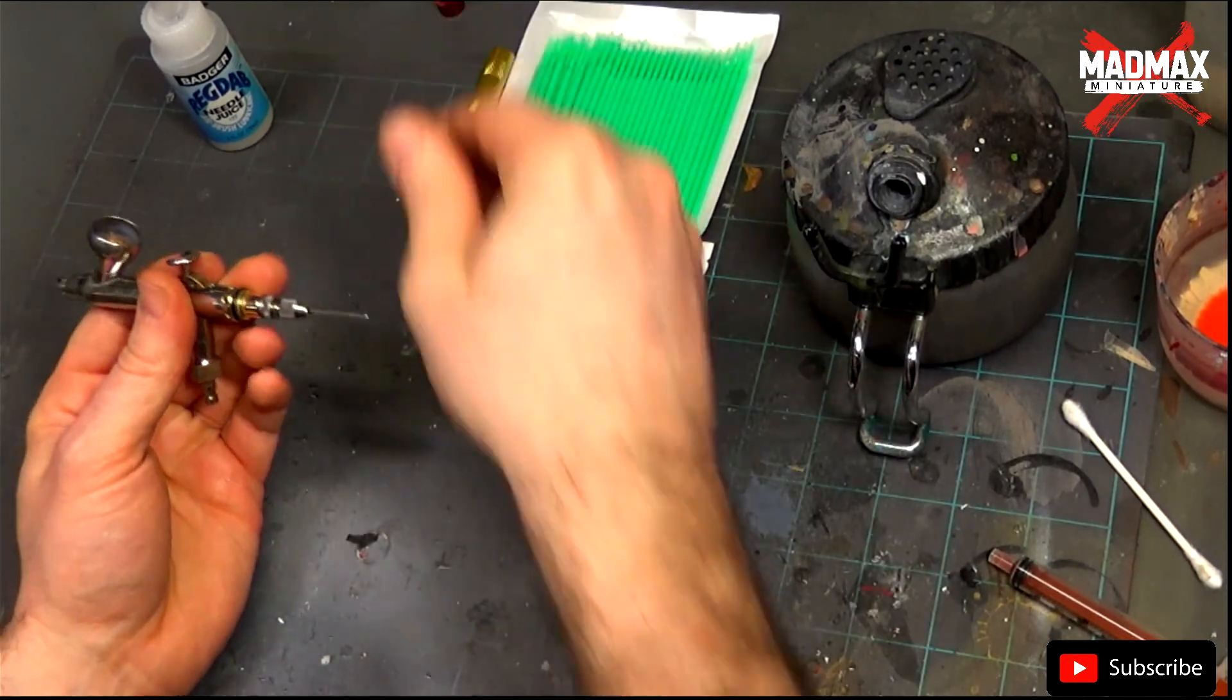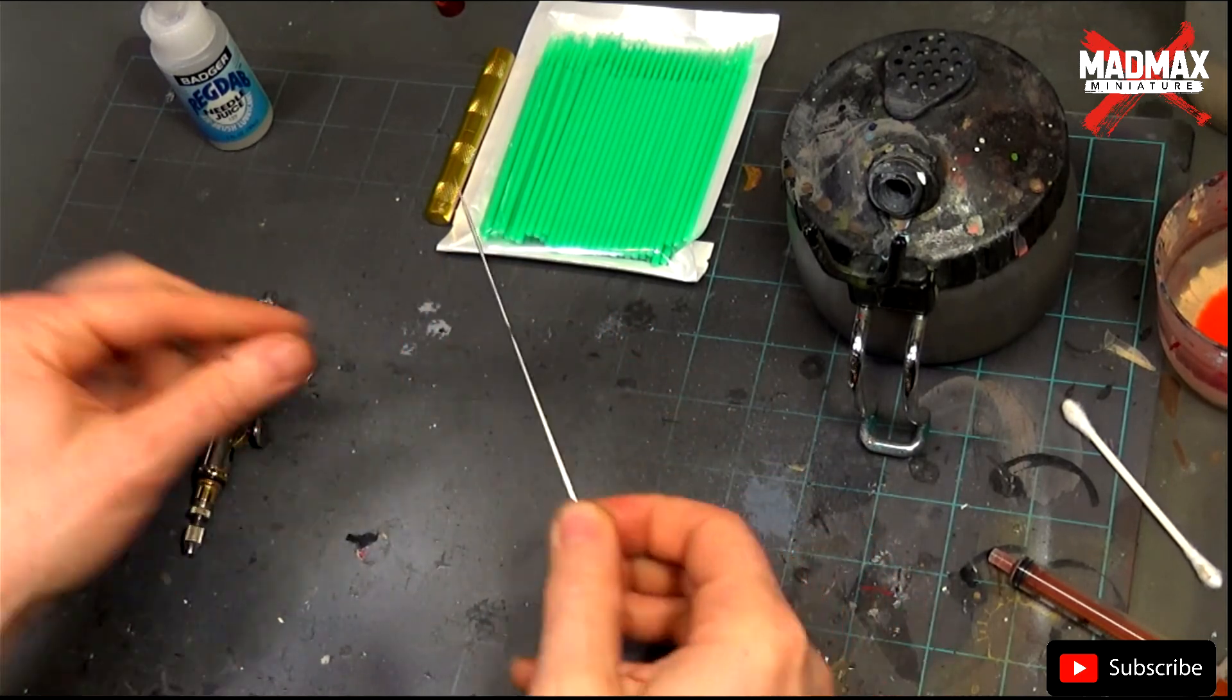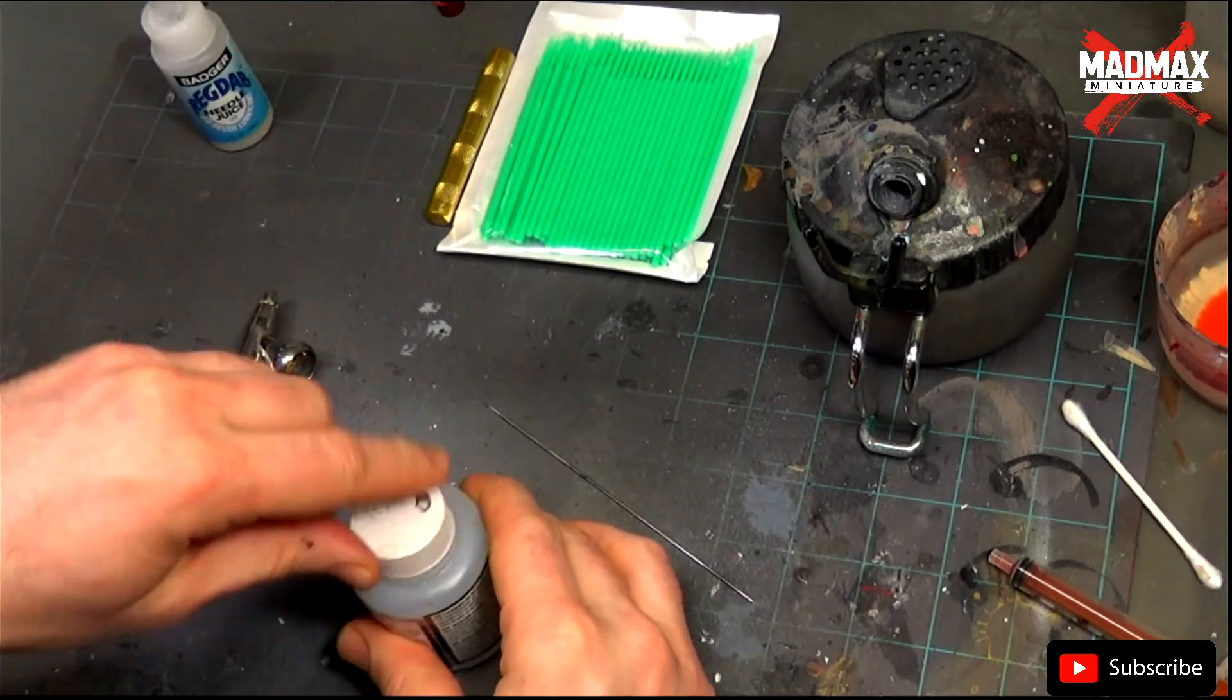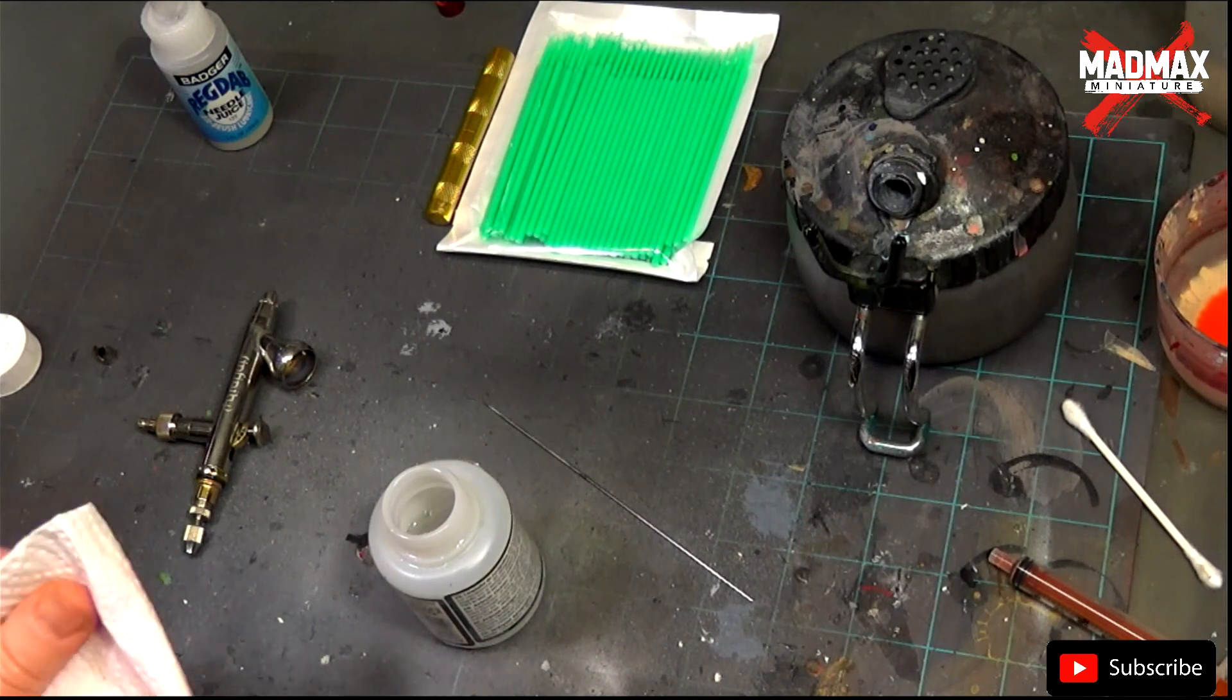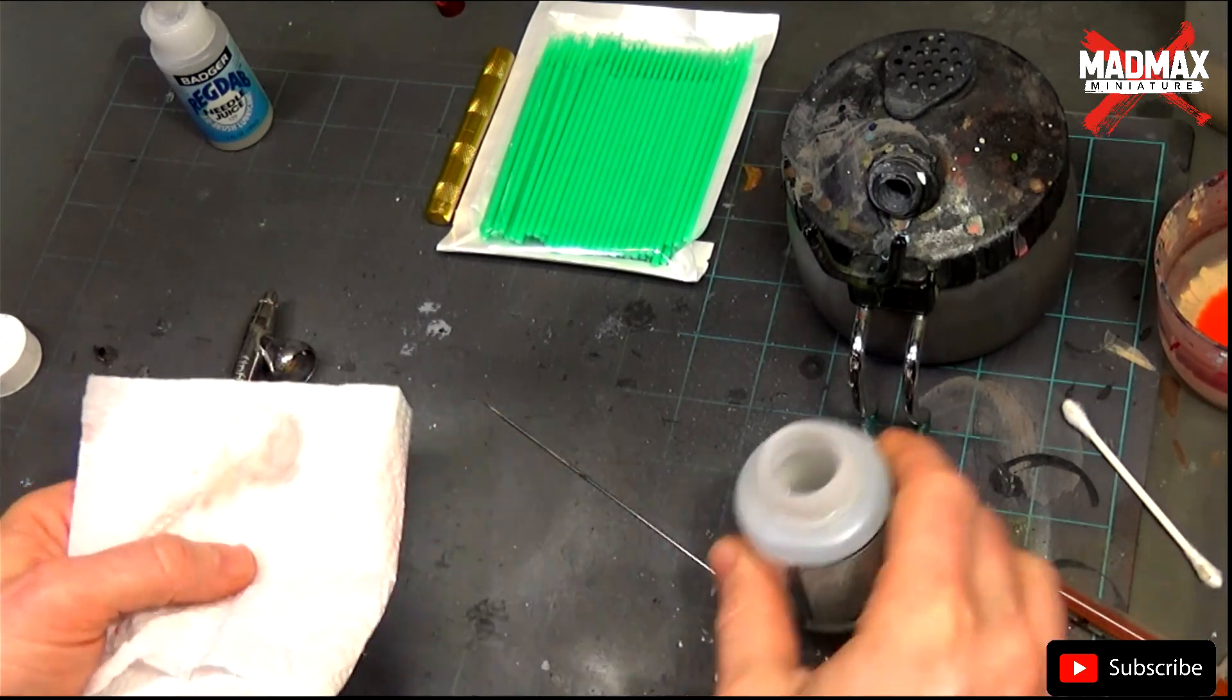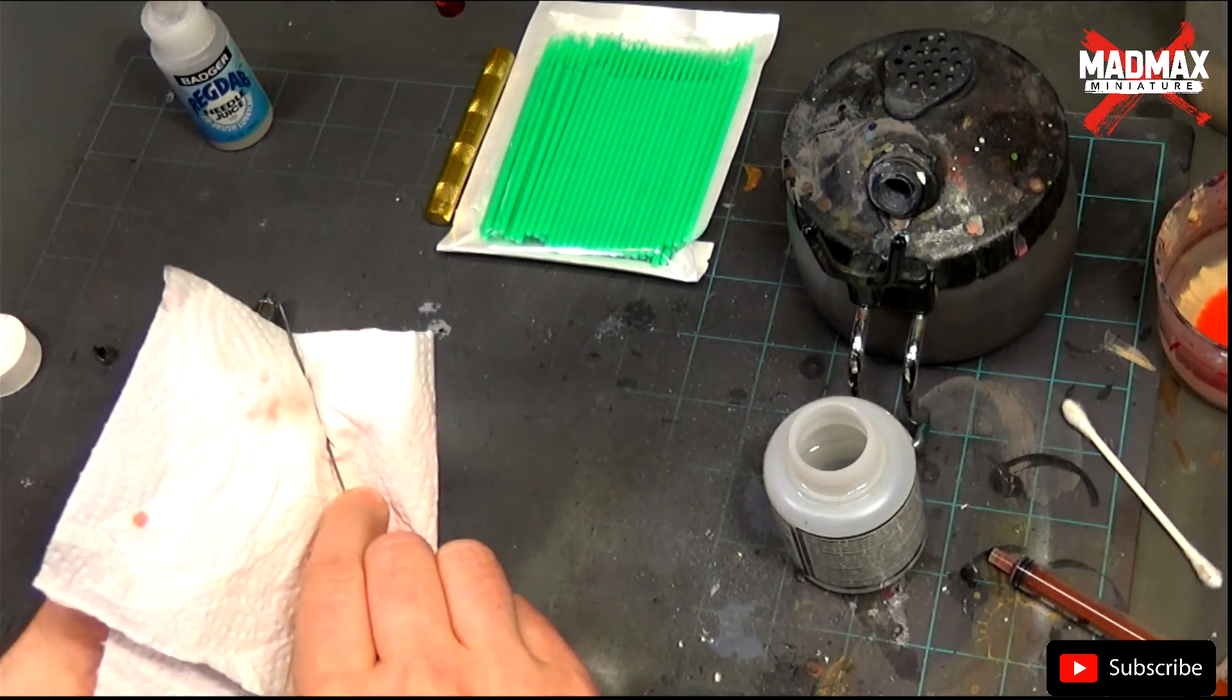So the first thing to do is to take the needle out. As you can see there is some paint on the needle. To clean this, we take a small amount of airbrush cleaner on a towel and we gently clean it. This piece is the most fragile one on the airbrush, so be careful.